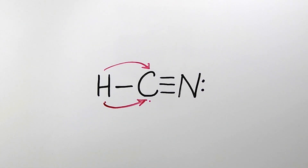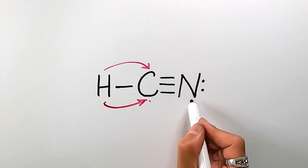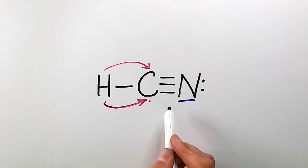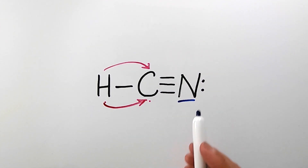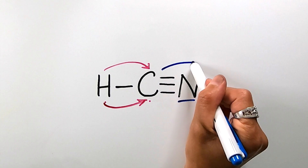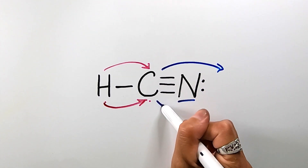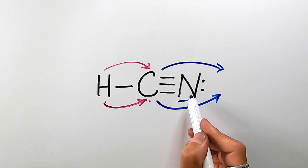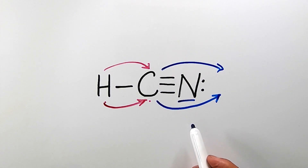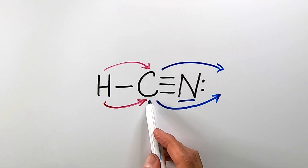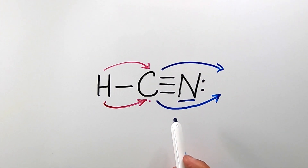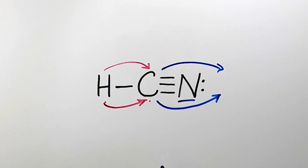Now let's look toward the right side of the molecule. Nitrogen is more electronegative than carbon, which means nitrogen will withdraw electron cloud density from the carbon, making nitrogen the electron-withdrawing group. And in this case, carbon is now the electron-donating group. So you see the relativity between electron-withdrawing groups and electron-donating groups.